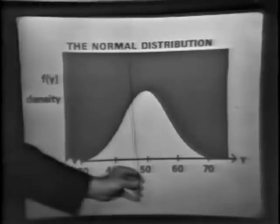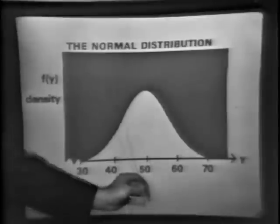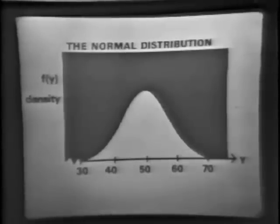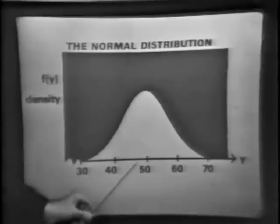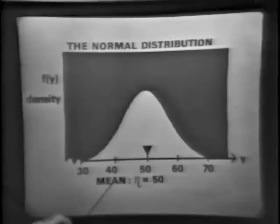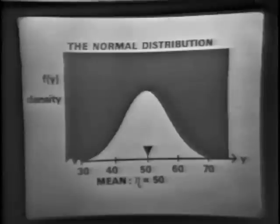At 50, we also notice that's the position that divides the area under the curve into two equal portions — that, of course, would be called the median of the distribution. But more important than either one of these characteristics is the first moment of the distribution, the point of balance. That's called the mean of the distribution, sometimes referred to as the location parameter. In this instance, the mean eta — that's the symbol we're reserving for the mean — eta is equal to 50.